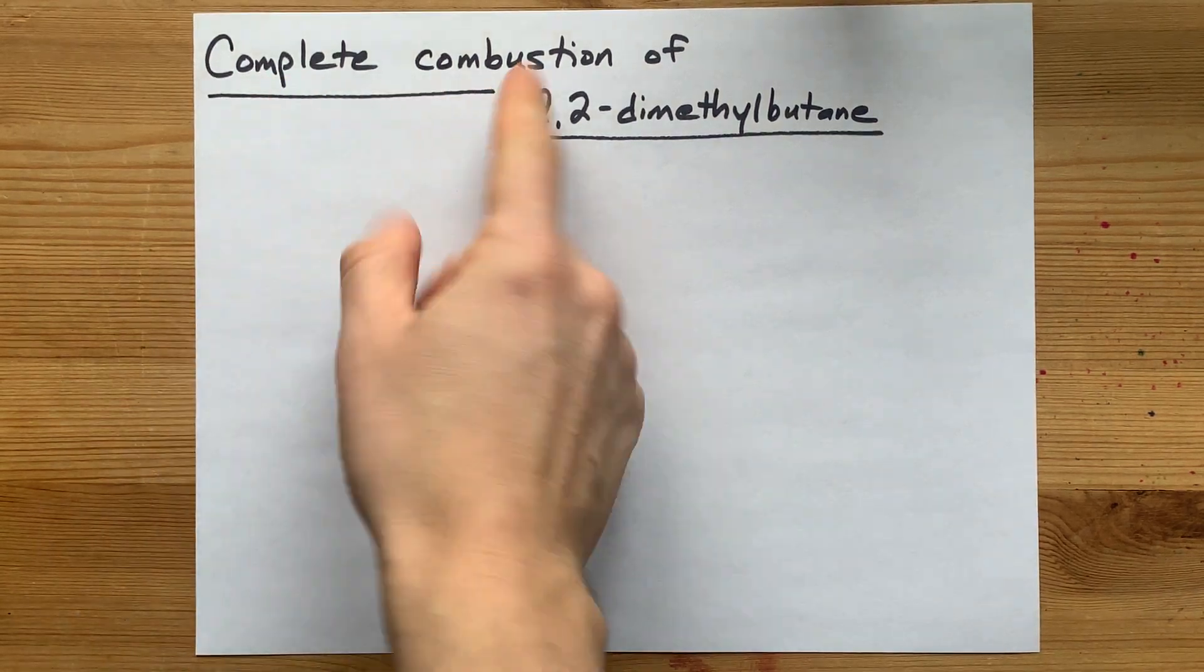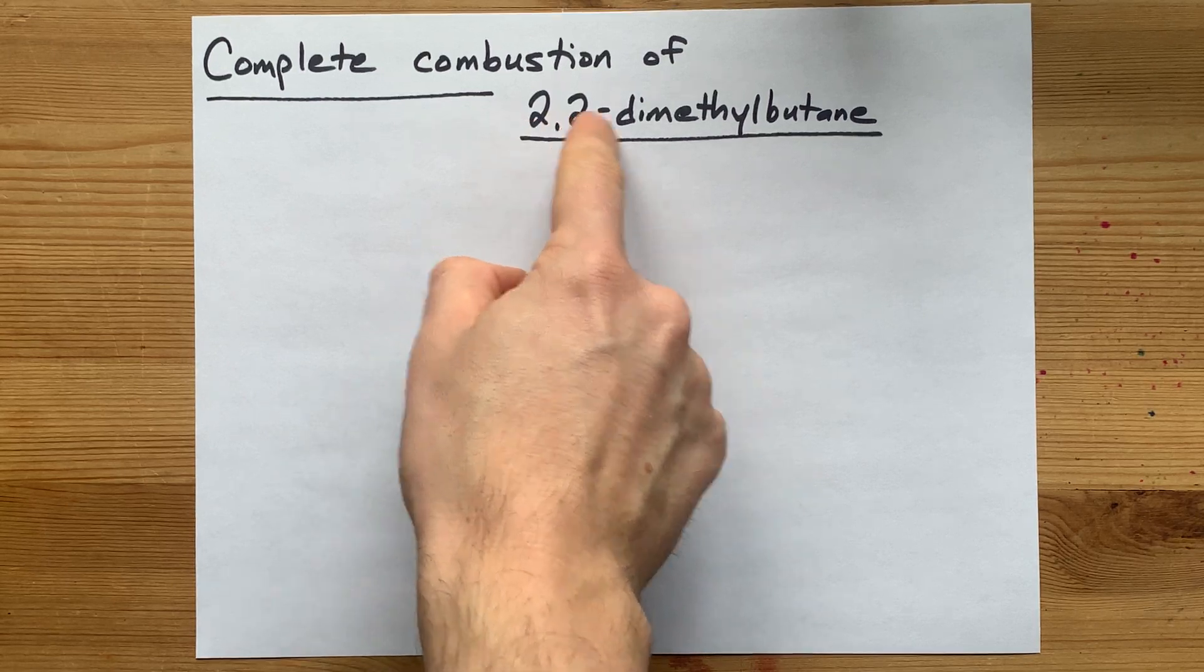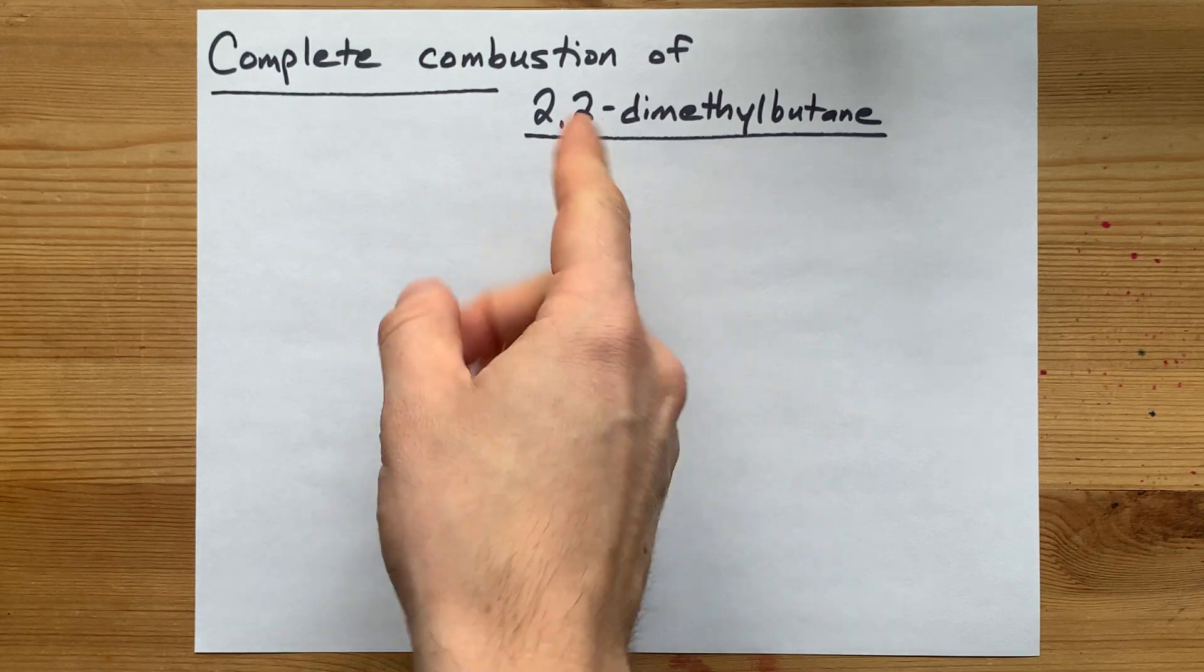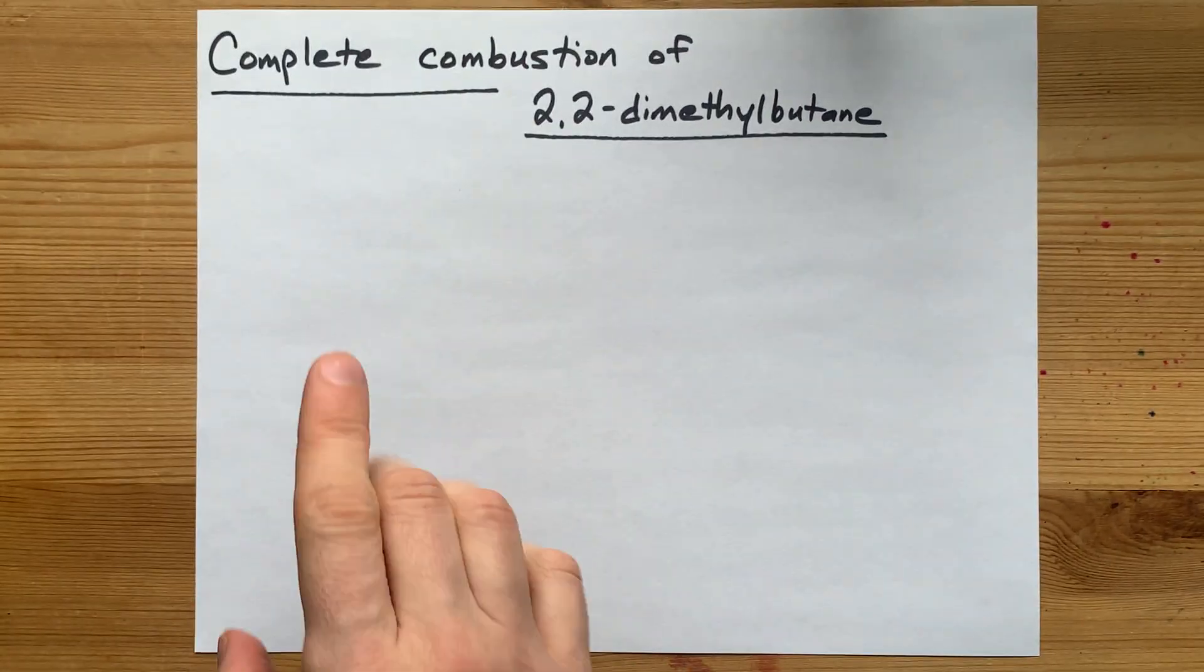Now this is admittedly an obscure question that I got by email. We're looking for the complete combustion of 2,2-dimethylbutane. Combustion is when you react a hydrocarbon with oxygen. Complete means you make only carbon dioxide and water.